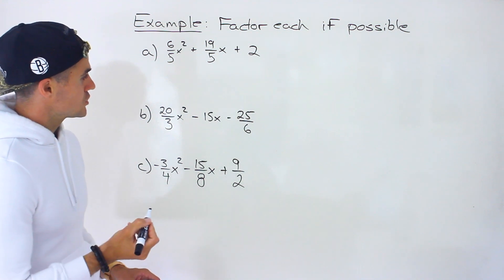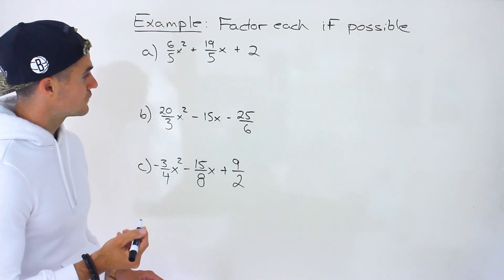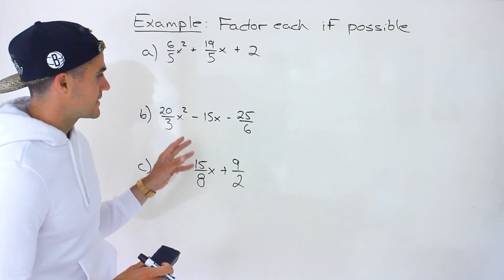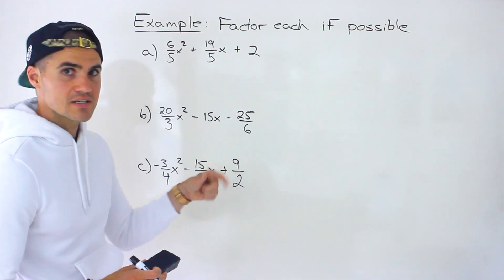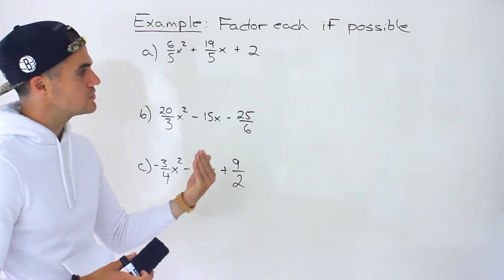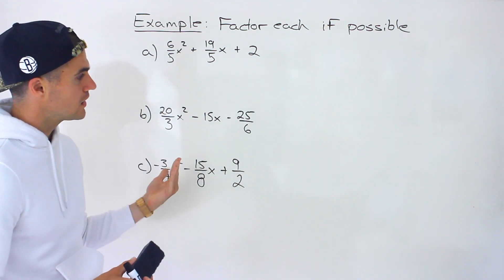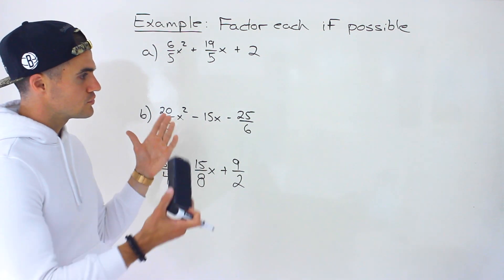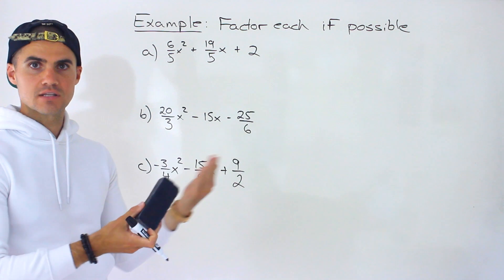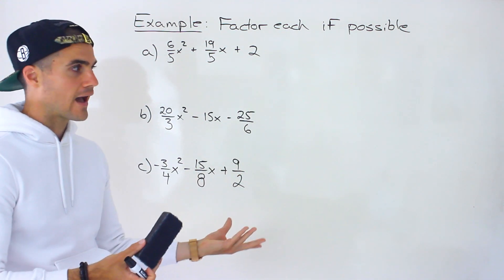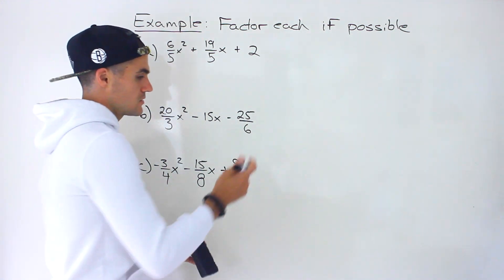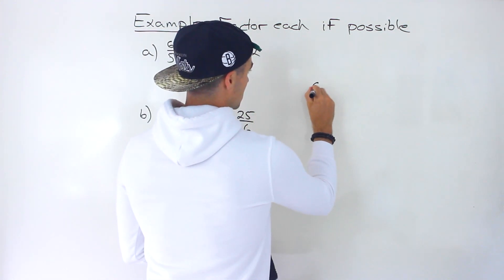With fractions, personally, the first thing I do is take all of the expressions and express them in terms of the same denominator — the lowest common denominator. Then I factor out that denominator in order to have an expression remaining that doesn't have any fractions. And then you can just go into factoring that as you would with the previous examples.